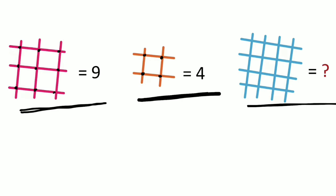So just count the intersection points which are 5, 6, 7, 8, 9, 10, 11, 12 and 16. So the answer is 16.